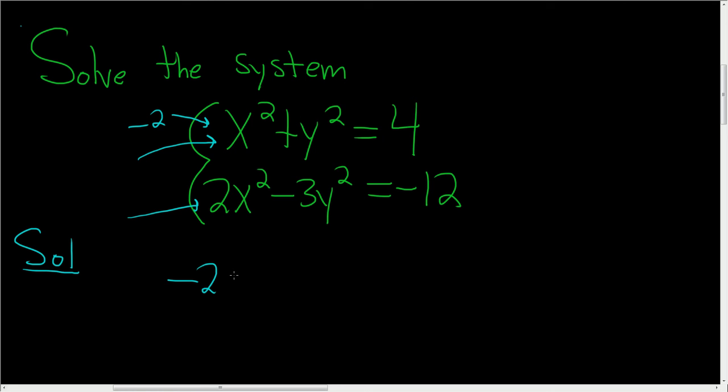So negative 2x squared minus 2y squared, multiplying by negative 2, and then 4 times negative 2 is negative 8.